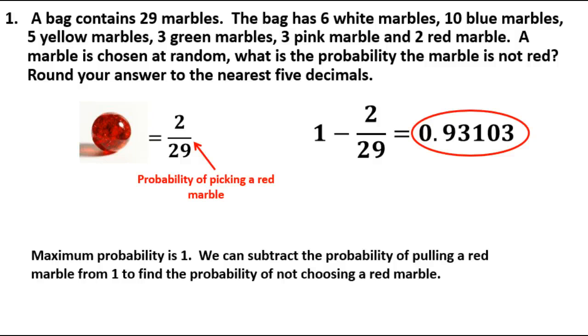And so it's a 93% chance, or a 93% probability, that that marble is not going to be red. And that sounds about right. We've got 29 marbles total. Only two of them are red to begin with. So it's a very high likelihood that it's not going to be red. And that's what it showed here. We'll be right back.